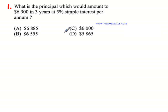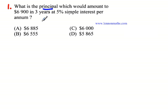So we're looking at this question. Let's get straight into it. It says, what is the principle which would amount to $6,900 in three years at 5% simple interest per annum? So we're looking for the principle — what is the principle that would amount to $6,900?